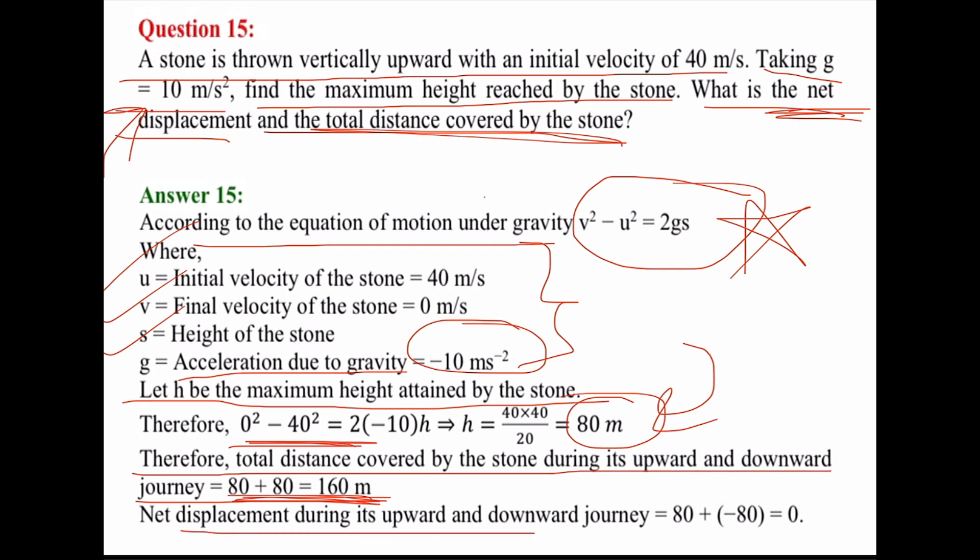For the net displacement of the upward and downward journey: the upward journey is positive 80 meters and the downward journey is negative 80 meters. From integers, 80 plus minus 80 equals 80 minus 80, which is 0. So the net displacement is 0.